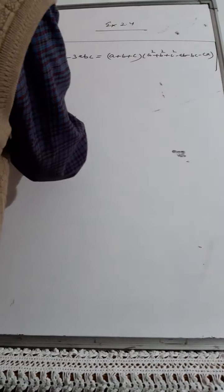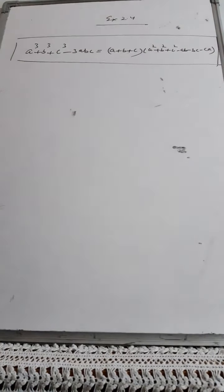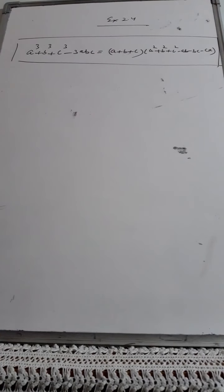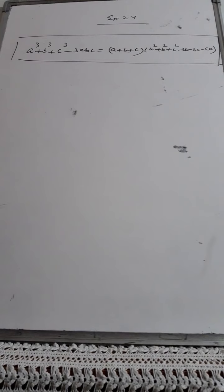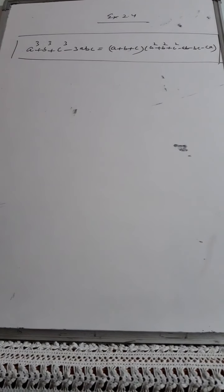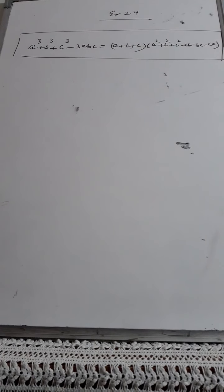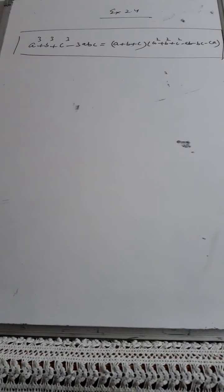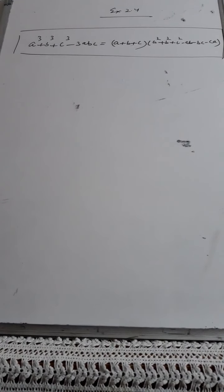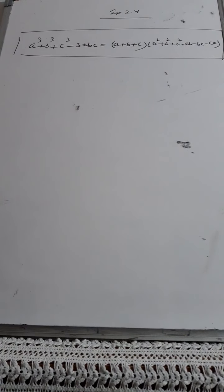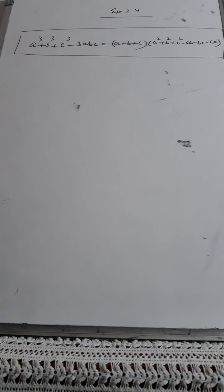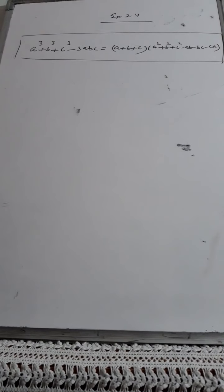From your understanding point of view, you did not do this in your previous class. So add this to your knowledge. a³ + b³ + c³ - 3abc is equal to (a + b + c)(a² + b² + c² - ab - bc - ca). You have to remember this.